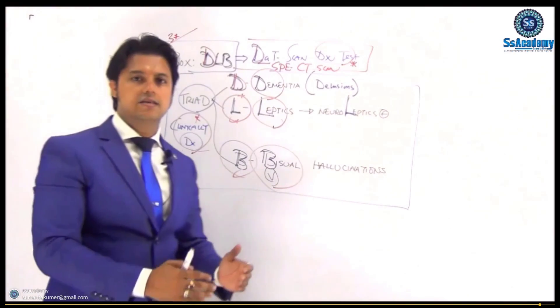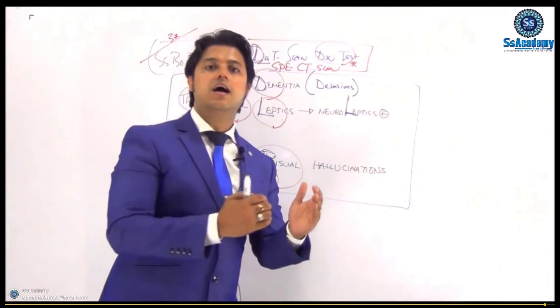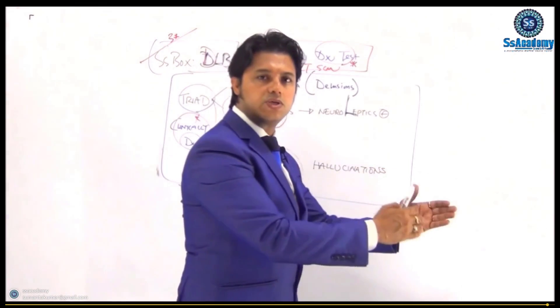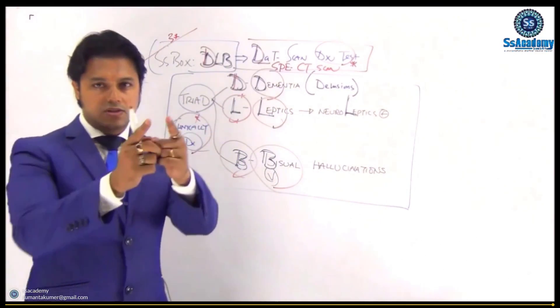DAT scan is the diagnostic test. That is you must remember. And DLB: D for dementia, L for neuroleptics, and B for visual hallucinations. My dear, I hope that you enjoyed it. Thank you. Thank you very much.